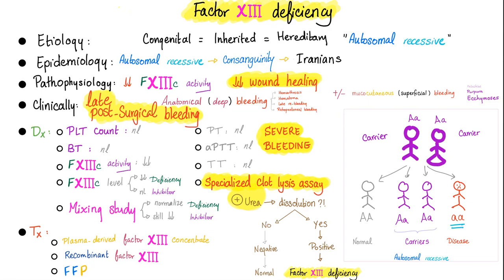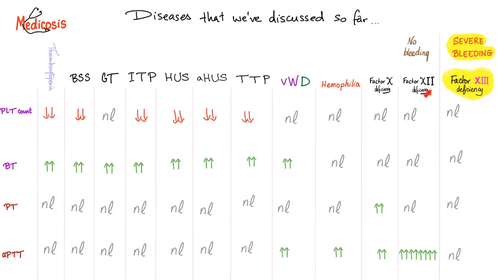To treat Factor 13 deficiency, if the patient lacks Factor 13, give Factor 13. If a concentrated form is unavailable, give something that contains all clotting factors — fresh frozen plasma. Compare this to Factor 12 deficiency, where there were no symptoms but the PTT was so prolonged. Factor 13 is the opposite: severe symptoms yet PTT is absolutely normal — in fact all standard tests are normal. The only way to diagnose it is to measure Factor 13 activity or perform the specialized clot lysis assay using urea.